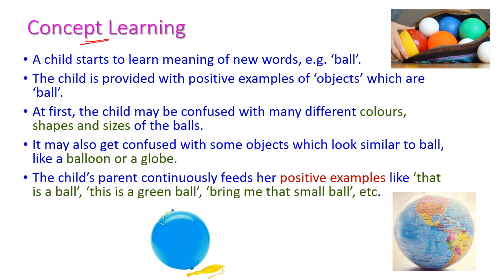First, let us see what is concept learning. Concept learning is exactly similar to how a child starts to learn new words. For example, let us take a ball — how the child learns the ball object. We have to provide more number of balls, a collection of balls. The child gets confused by the many different colors, shapes, and sizes of the ball. Here we are having more collection of balls — different colors, different shape, and different size.